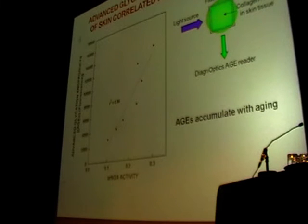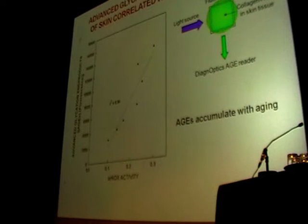ARNOX activity correlated with advanced oxidation of epidermis measured spectrophotometrically. Advanced glycation end products accumulate with aging, and this accumulation is measured by what's known as a dietoptic age reader.